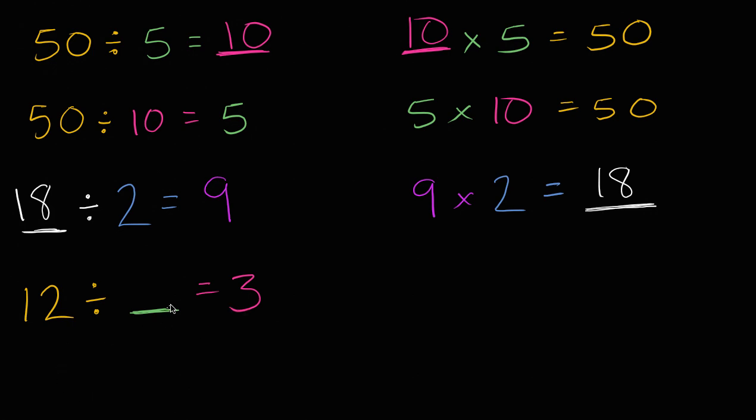Well, one way to think about this is 3 times blank is going to be equal to 12. 3 times this unknown number is going to be equal to 12. And 3 times what is equal to 12? Well, 3 times 4 is equal to 12. So 12 divided by 4 is equal to 3.